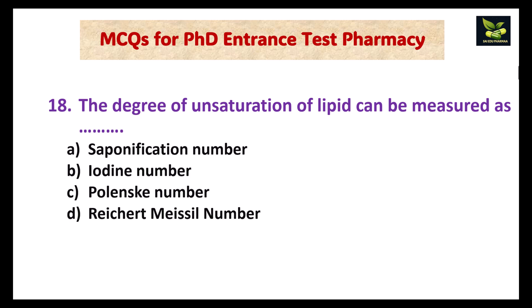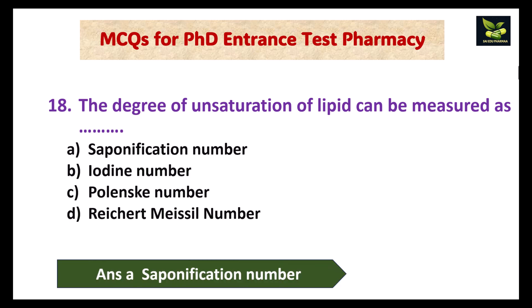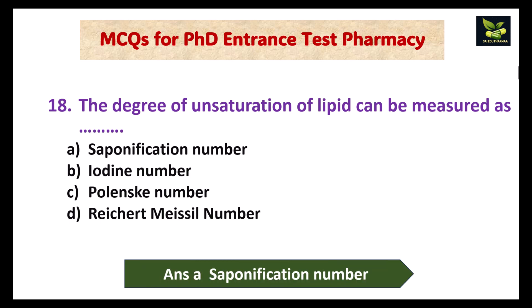The degree of unsaturation of a lipid can be measured as? The answer is A, that is saponification number.